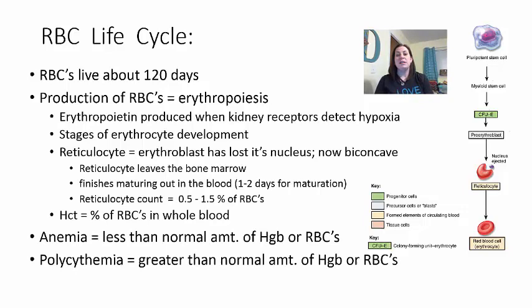The hematocrit is the percentage of red blood cells in whole blood. If your hematocrit is low, you are considered anemic—anemia means having less than the normal amount of hemoglobin or red blood cells. On the other hand, polycythemia is where you have a greater than normal number of red blood cells or amount of hemoglobin in the blood.